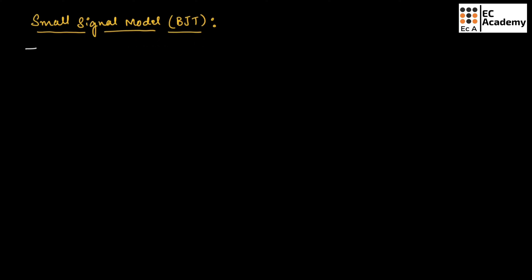The aim of the small signal model is to find AC current and AC voltage. In this small signal model, we will be using both AC and DC signals and we will find AC current and AC voltage.